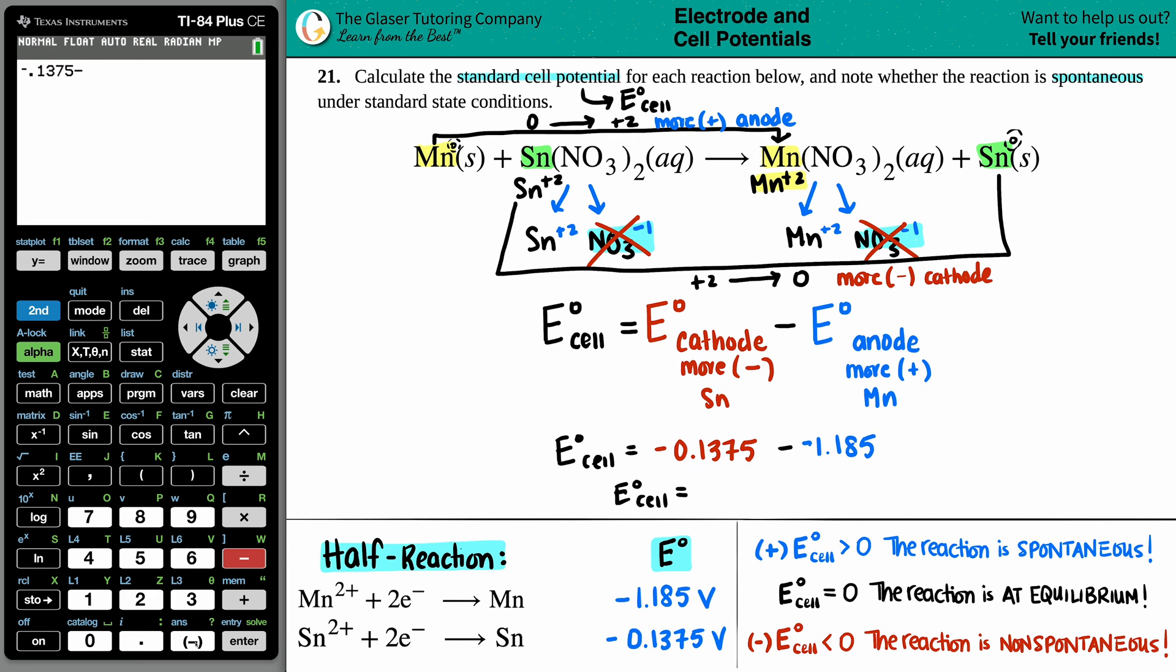Okay, so now I'm back to the calculator. So minus a negative 1.185. Making sure that everything looks good here. Let's press enter. And it seems like this is only to the thousandths place. So technically my answer should only be to the thousandths. And it's going to be 1.048 if we care about sig figs. And that's going to be volts. So that's my standard cell potential value.